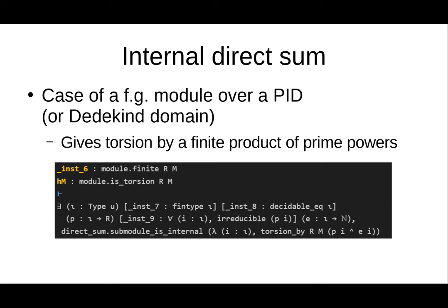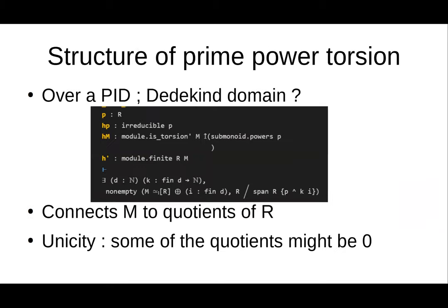So this part is done. Now we have the internal direct sum, meaning M is isomorphic to the direct sum of its prime-power torsion submodules. Next we need to give those submodules the structure of a direct sum of prime-power quotients. This part would actually be harder with ideals.